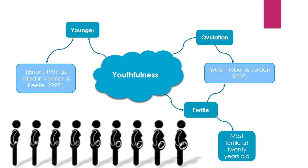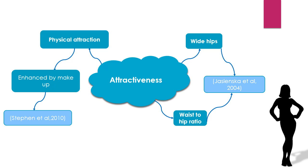Furthermore, we have attractiveness. As found with females, males also look for physical attraction, which is often enhanced by makeup. However, they see wide hips and waist-to-hip ratio as two of the most important features of the female body, because these features are seen as indicative of the ability to carry a child.